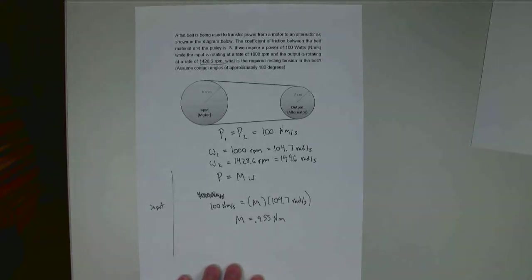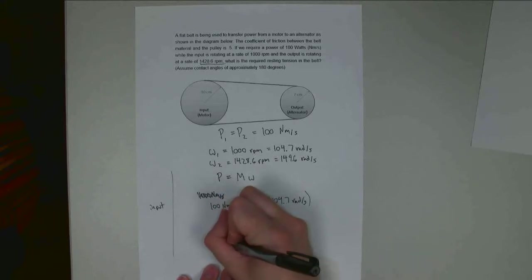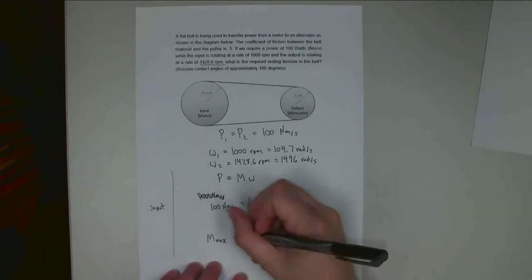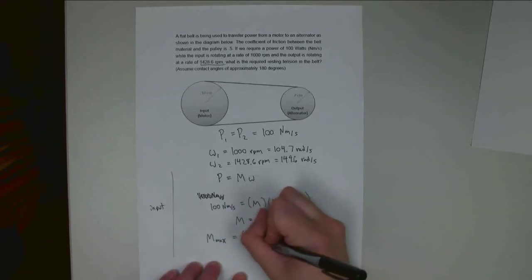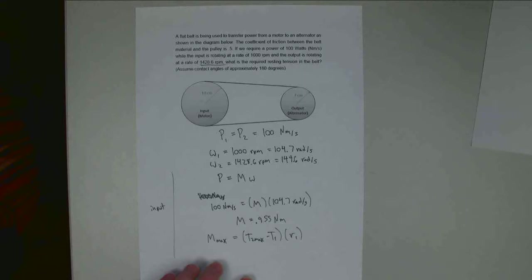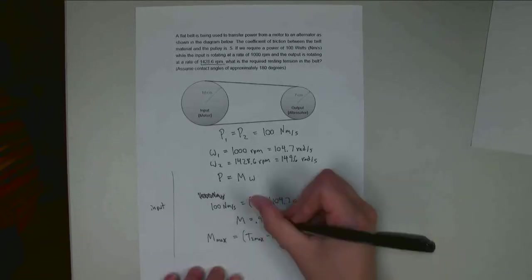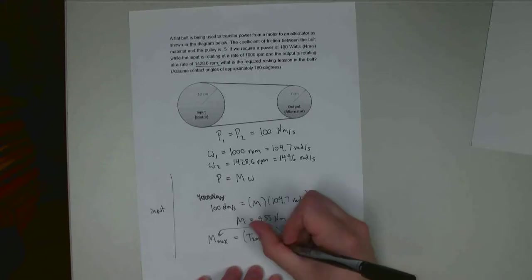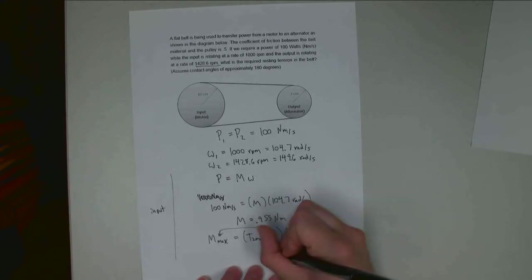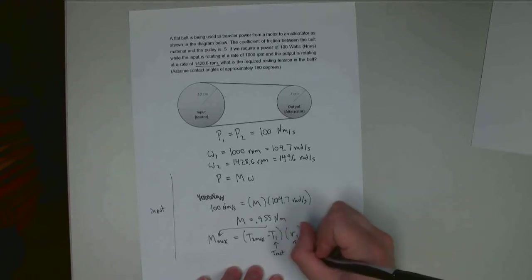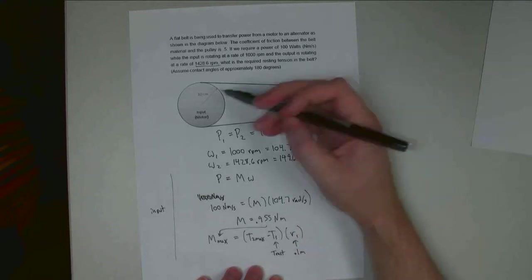So I can go further backwards with this. The M max, this would be the maximum moment that the pulley exerts before it starts slipping, is equal to T2 max minus T1 times R1. And this is the radius of the input pulley. So I don't know T2 max. I do know that this M, I want this to be on the verge of slipping, so I'm going to put that in there. T1 is the resting tension. That's what I'm looking to find. And R1 is .1 meters, or 10 centimeters.